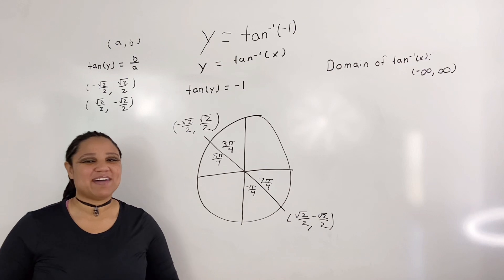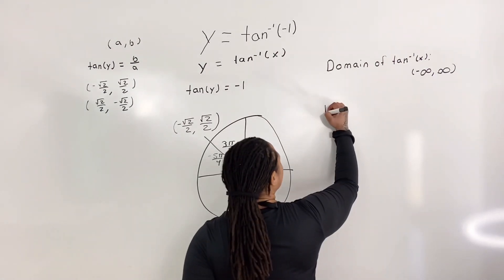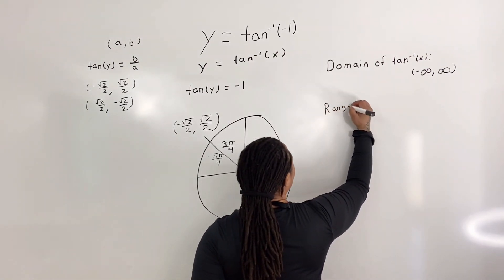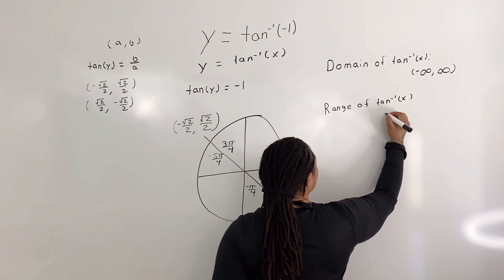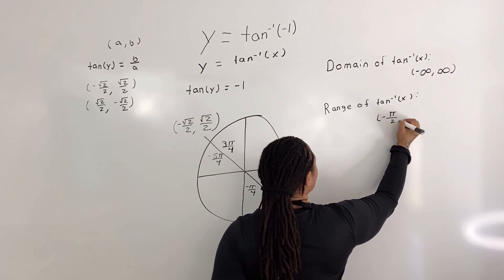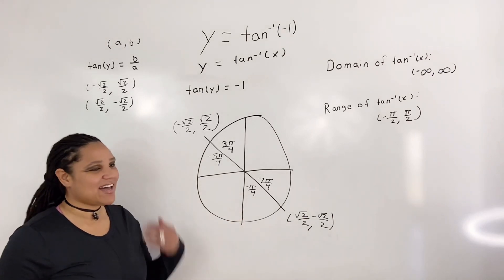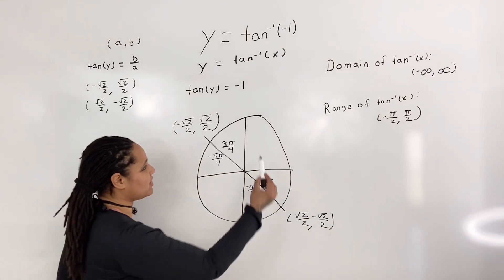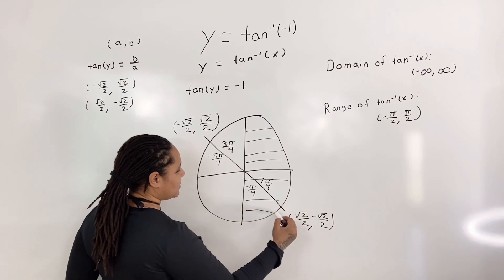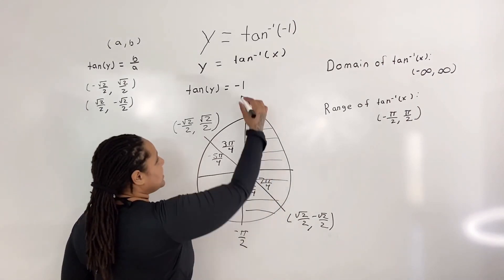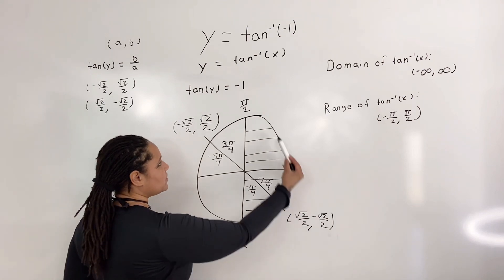We can't just choose any value for y — we must consider the range of inverse tangent. The range of tangent inverse is from negative π over 2 to π over 2. This eliminates the whole left side of the unit circle, and we're only focusing on the right side. We have negative π over 2 on one end and π over 2 on the other, so we can only stay within that interval.